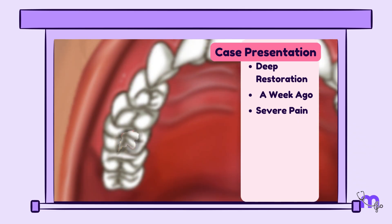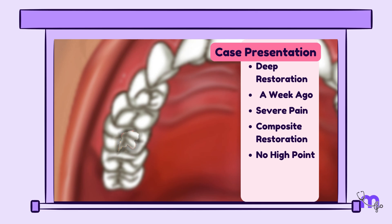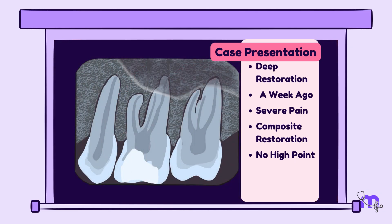I observed an appropriately placed composite restoration with no high points, which was a clear sign that the problem was deeper. A radiograph showed a deep restoration encroaching the pulp in his upper right first molar.